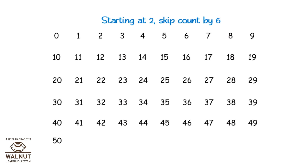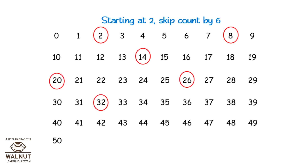Starting at two, skip count by six: two, eight, fourteen, twenty, twenty-six, thirty-two, thirty-eight, forty-four, and fifty.